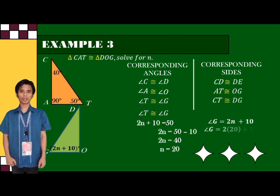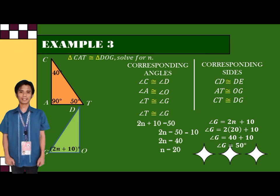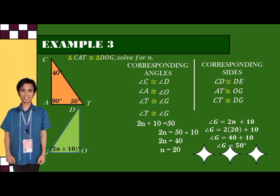Angle G is equal to 2N plus 10. Now, we are going to substitute 20 to the value of N. And we will get angle G is equal to 2 times 20 plus 10.